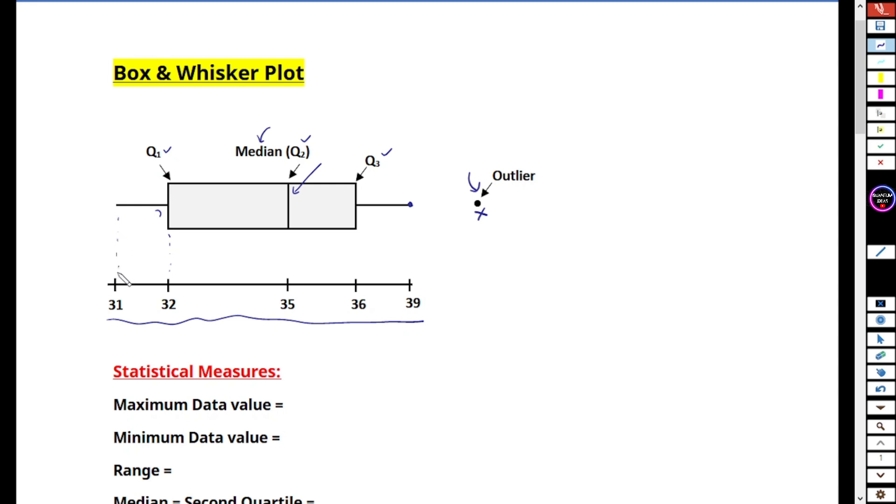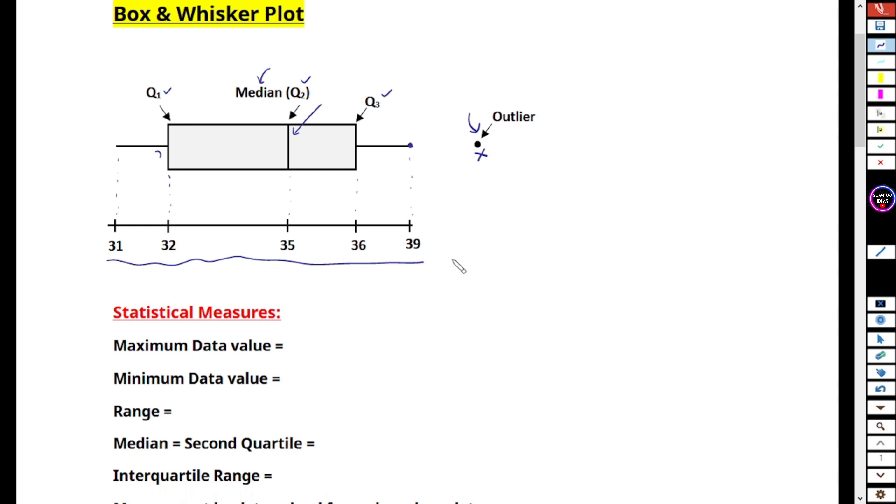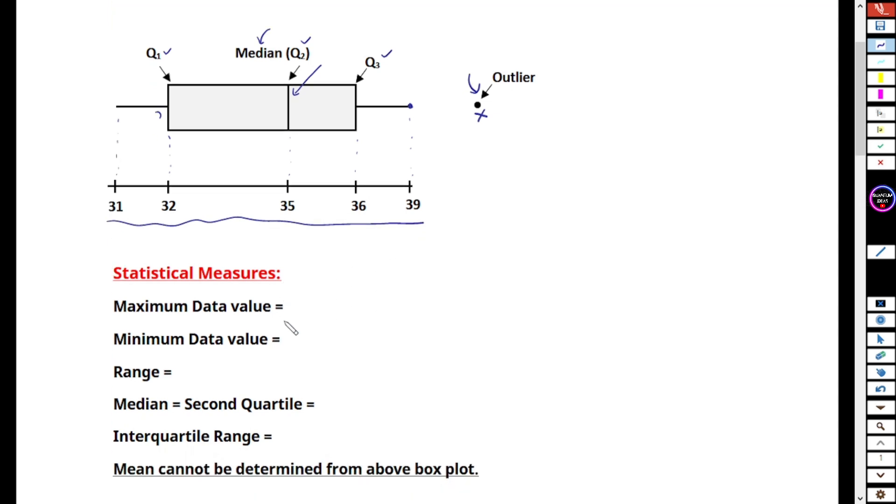So let's understand what informations are given by those plots. Let's see what statistical measures are given by this box and whisker plot, or what statistical informations are given.